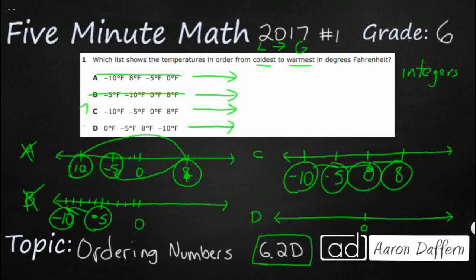And let's check D. We get 0. And then we get negative 5. Oh look at that. Wrong direction. That's moving from warmer to colder. I don't even have to do the rest. So my answer is going to be C.